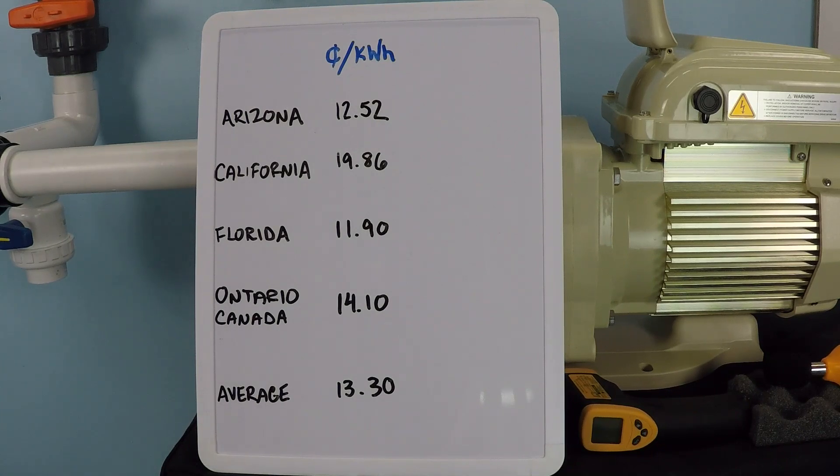Ontario, Canada is 14 cents per kilowatt hour. In Canada, the national average is 13.1 cents per kilowatt hour, so it's actually very comparable between the two, ignoring of course the difference between the currency values.